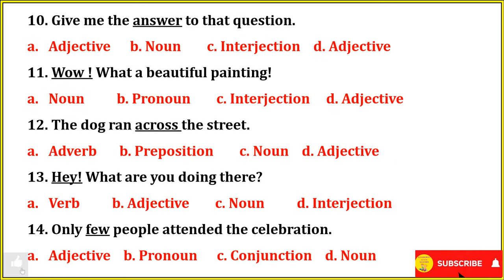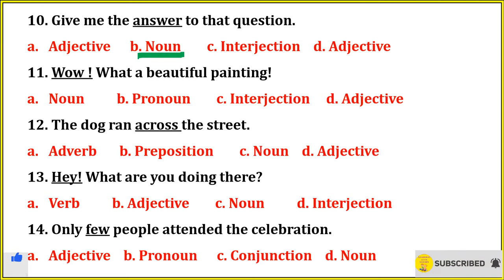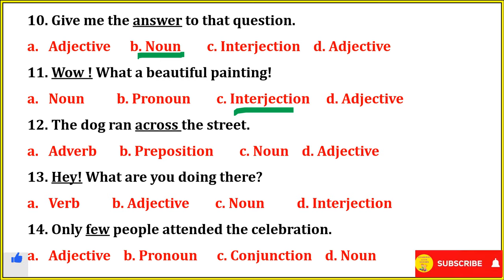Next set of questions. Give me the answer to that question — so 'answer' will be noun. What a beautiful painting — 'wow' will be interjection. The dog ran across the street — 'across' will be preposition.